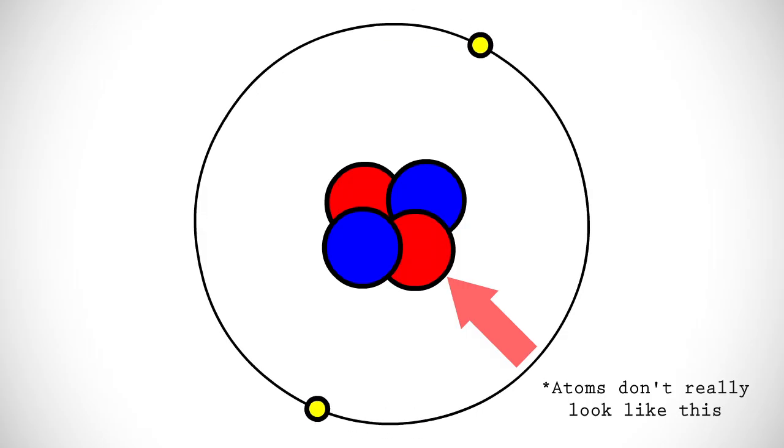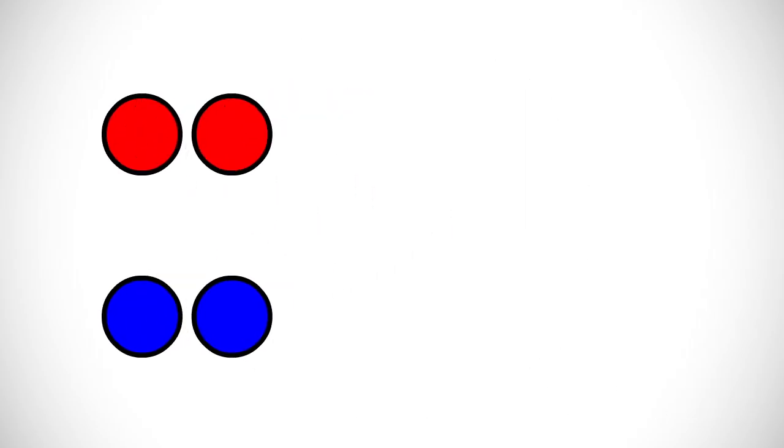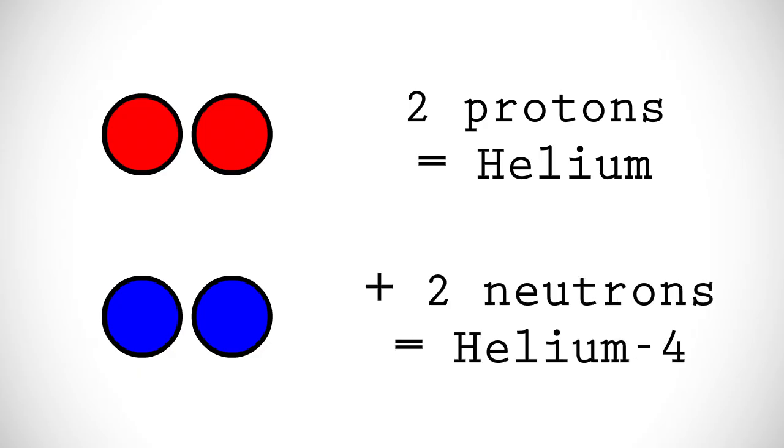An atom is made up of positively charged protons and neutral neutrons in a nucleus surrounded by negatively charged electrons. The number of protons in the nucleus defines an element, but a single element may have atoms with a varying number of neutrons.